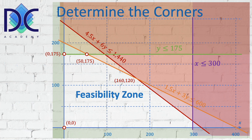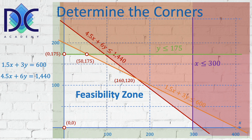The next corner point we already know: it's (160, 120). This comes from the intersection of 1.5x plus 3y equals 600 and 4.5x plus 6y equals 1440. To solve, multiply the first equation by 3 to get 4.5x plus 9y equals 1800, then subtract the second equation to find y, and substitute back to find x. The result gives us corner point (160, 120).